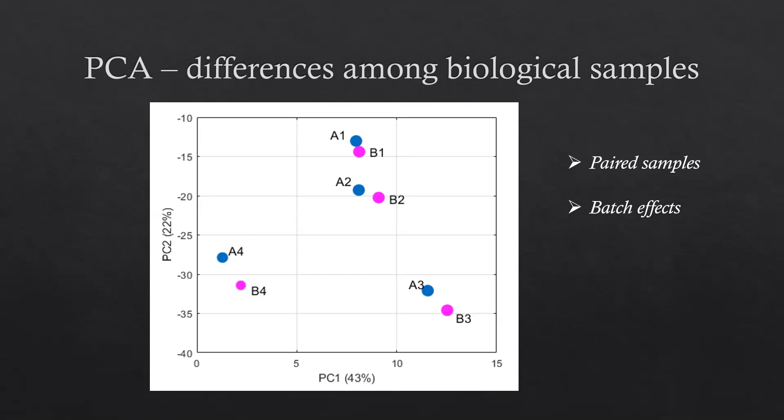For example, A1-B1 from the same animal, A2-B2 from another one. Or maybe there are existing batch factors when you prepare the samples or do the experiment.